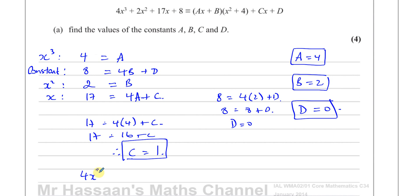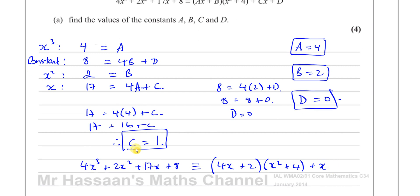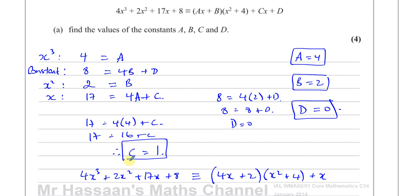I'll write the result in this form for the next part of the question: 4x³ + 2x² + 17x + 8 is identically equal to (4x + 2)(x² + 4) + 1x + 0. That's A = 4, B = 2, C = 1, D = 0. That's all we have to do for part A — just state these values.